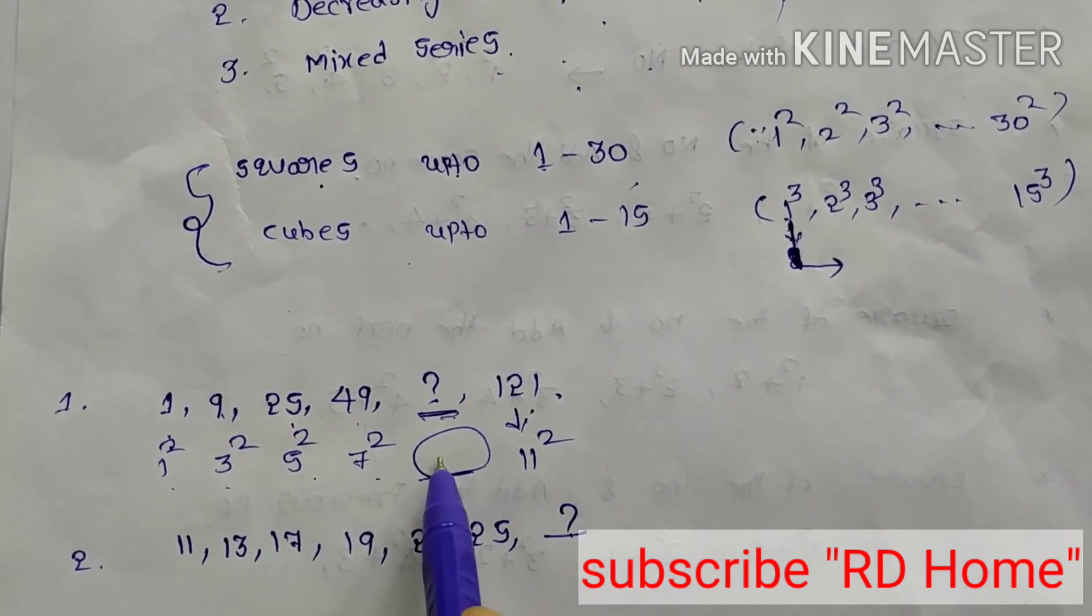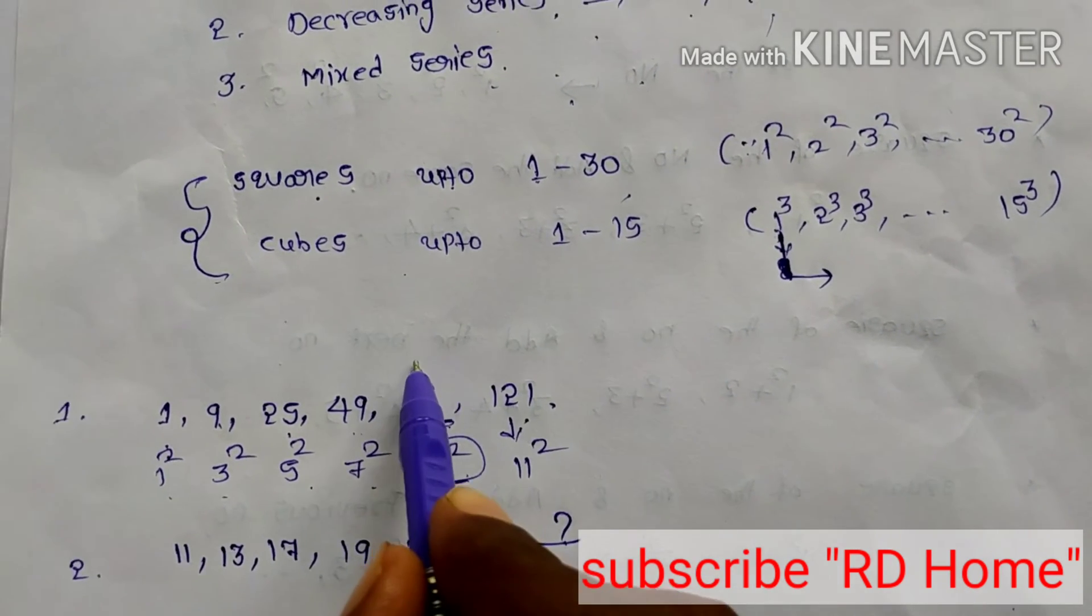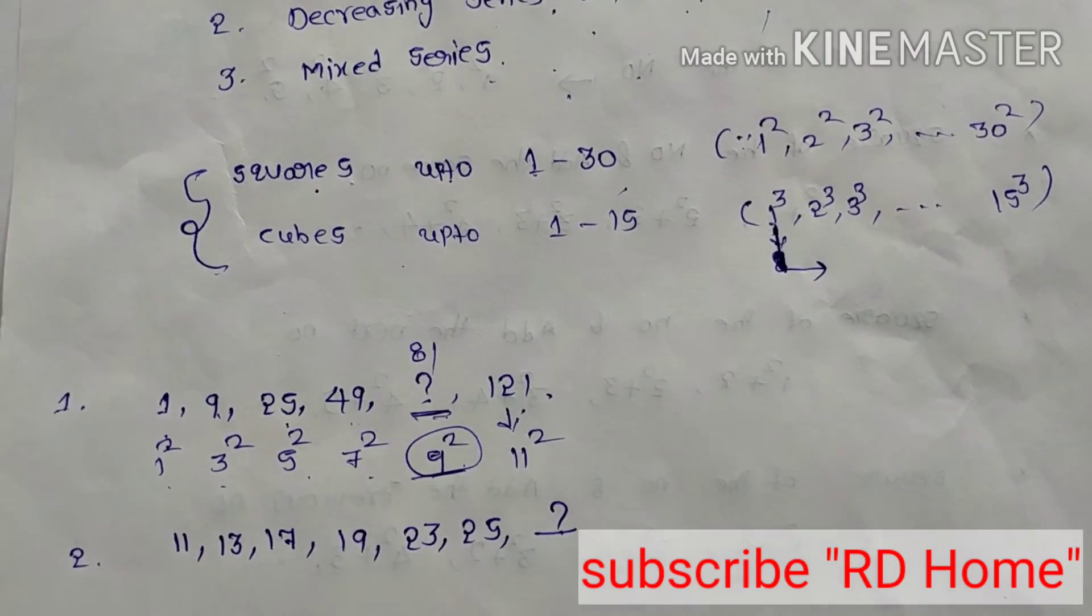Now you can see the numbers are following certain pattern. 1, 3, 5, 7. Which number will come? 9 only. After 9, 11. That means 9 square is how much? Yeah, it is your answer.